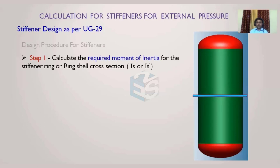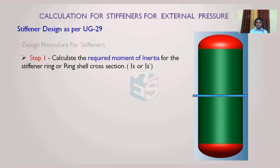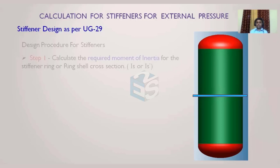First, we have to calculate the required moment of inertia at the junction where we are providing the stiffener. Two options are given by the code: we can calculate the required moment of inertia only for the stiffener ring, or we can take advantage of the shell also, which contributes to the moment of inertia in that area. Is is the required moment of inertia for only the stiffener ring, and Is' is the required moment of inertia of the stiffener ring as well as the shell cross section together.